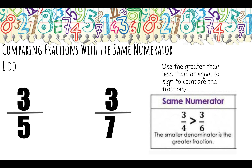Let's look at three-fifths and three-sevenths. Three-fifths is larger, even though its denominator is smaller. Think about it like this: five pieces of pizza and I ate three — that's pretty close to the whole. But if I had seven pieces of pizza and ate three, there's still quite a bit of pizza left. So three-fifths is larger.